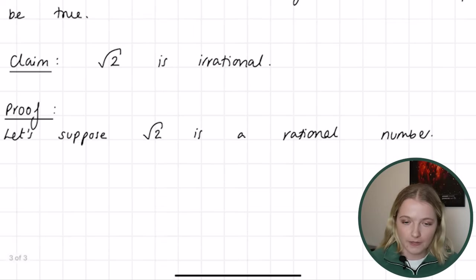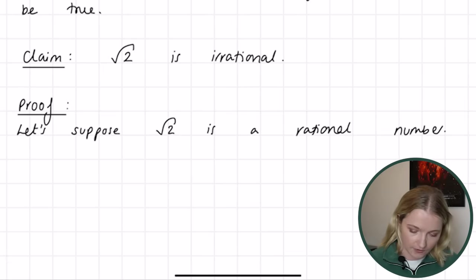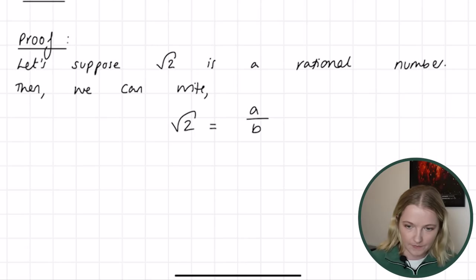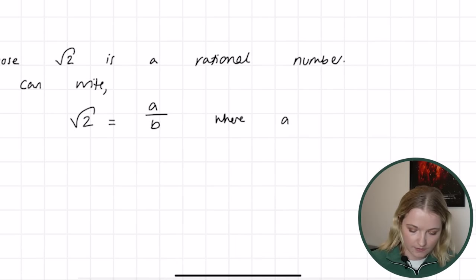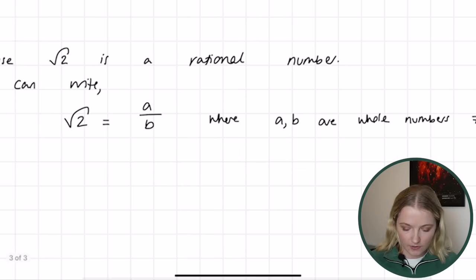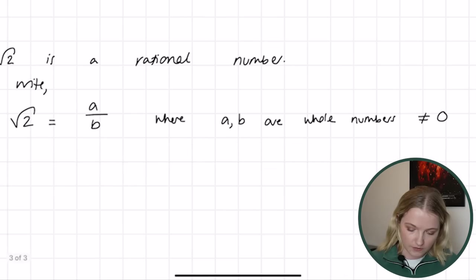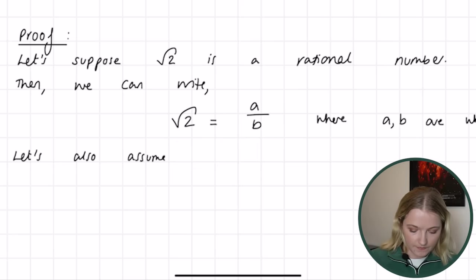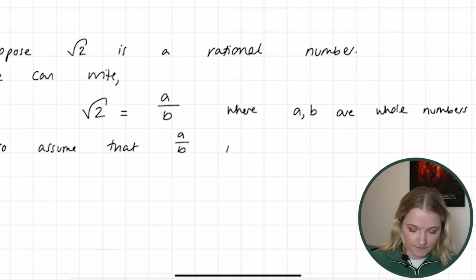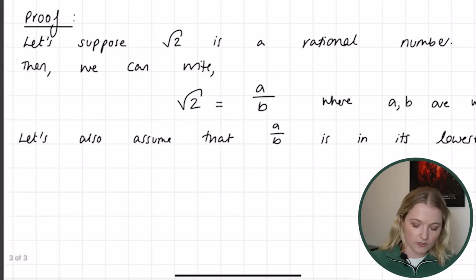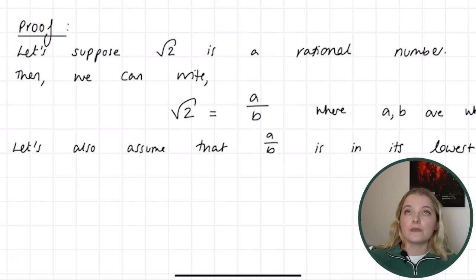We've assumed root 2 is rational, so we can write it in this form: root 2 equals a divided by b, where a and b are whole numbers and are not equal to zero. But we're not just going to assume it can be written in this form — we're also going to assume that a divided by b is in its lowest terms. What that means is you cannot reduce this fraction anymore. For example, 2 over 4 can be divided by 2 to give one half, and you can't reduce that any further.